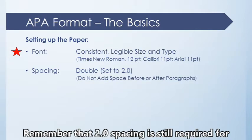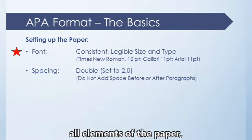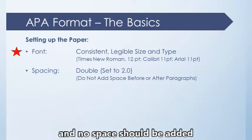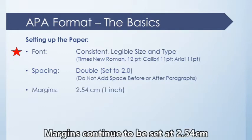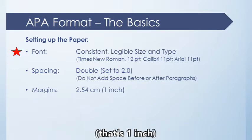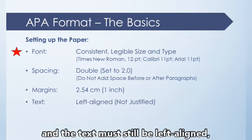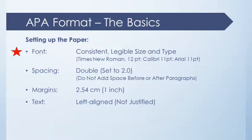Remember that 2.0 spacing is still required for all elements of the paper, and no space should be added before or after paragraphs. Margins continue to be set at 2.54 centimeters — that's one inch — on all four sides. The text must still be left aligned, rather than justified.